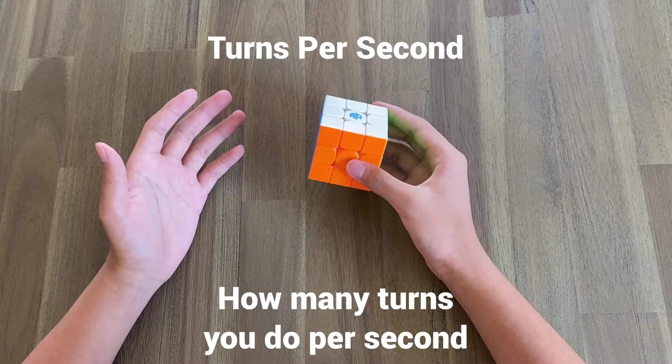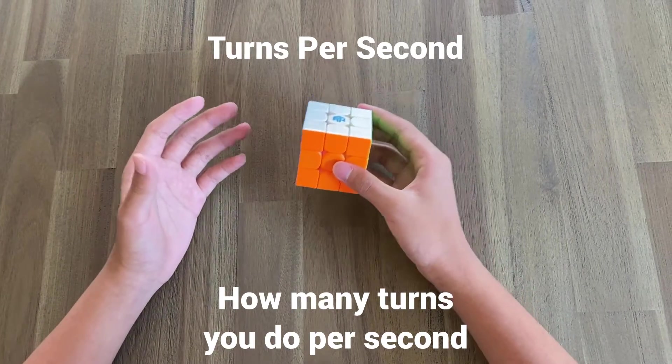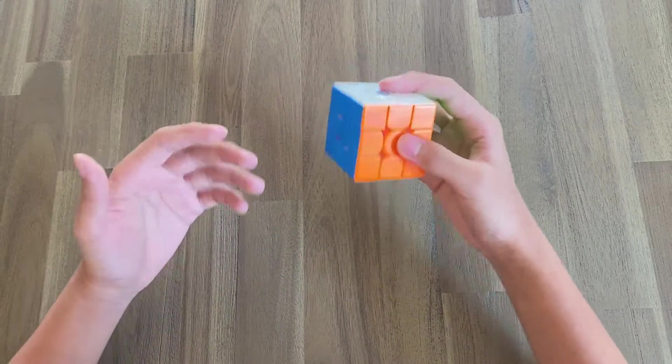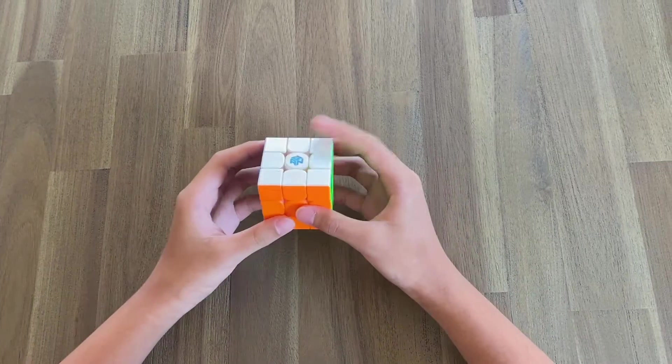How you calculate it is by dividing the total amount of turns you do in a certain time period in seconds over the amount of time. So let me do an example for you guys.